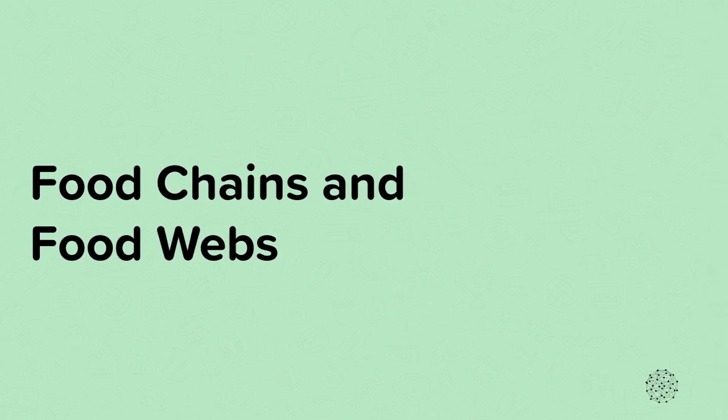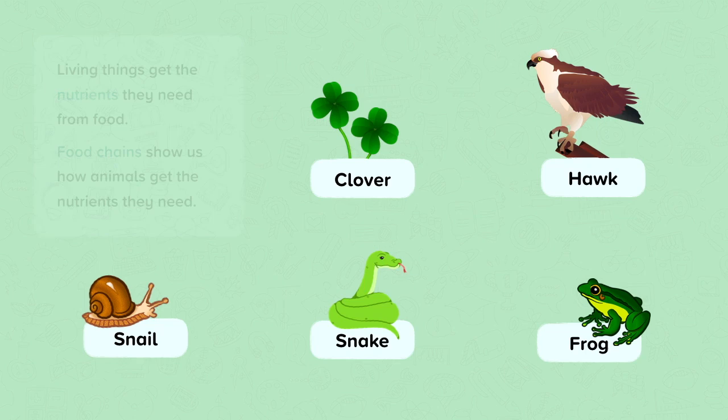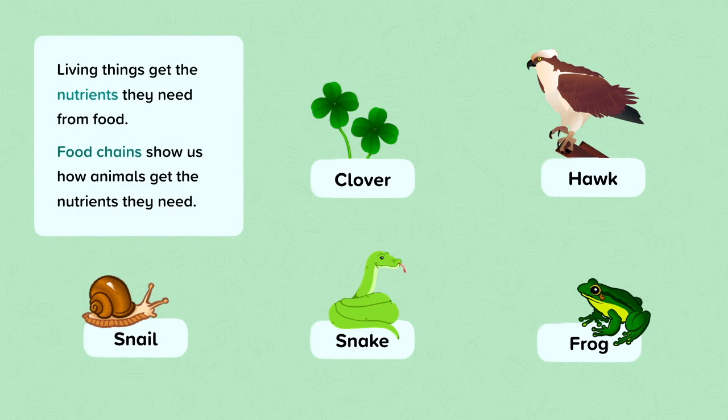This nugget is on food chains and food webs. All living things need food. From their food, living organisms get the nutrients that they need.